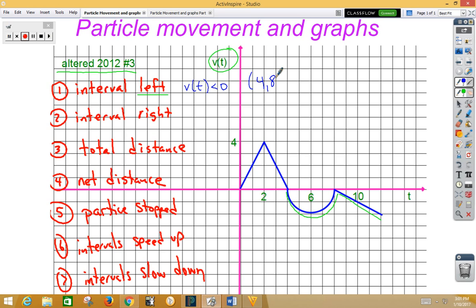So 4 to 8 union 8 to 12 is when the particle is traveling to the left because velocity is negative.